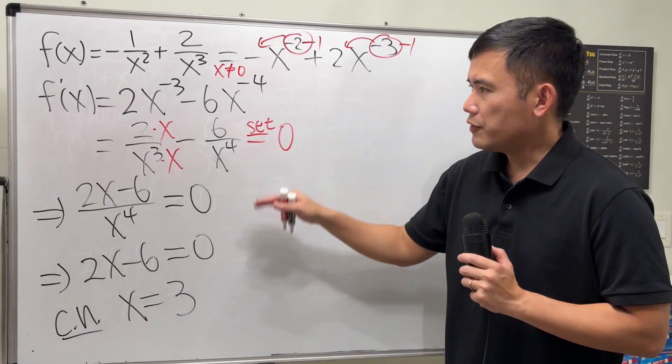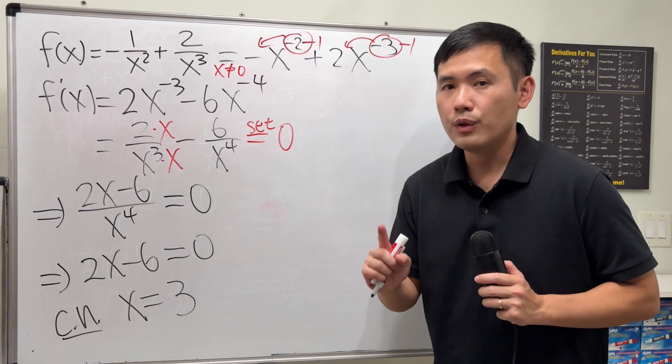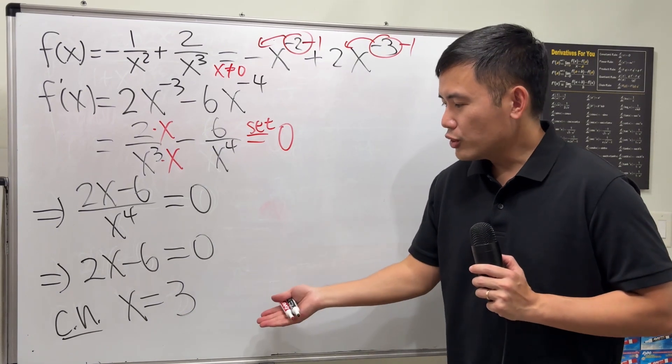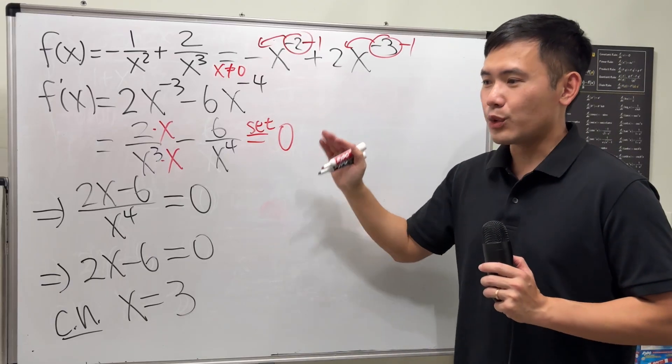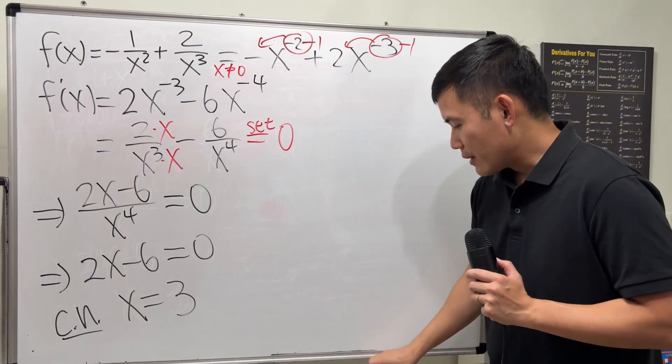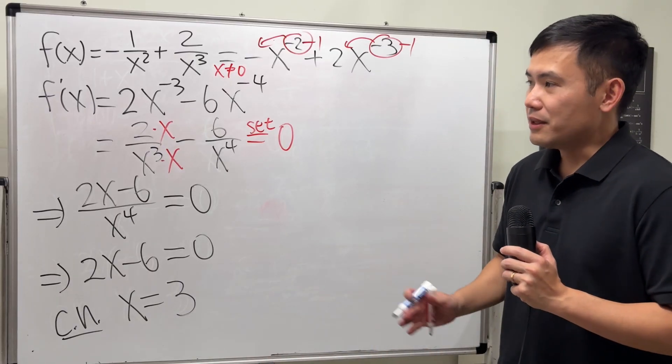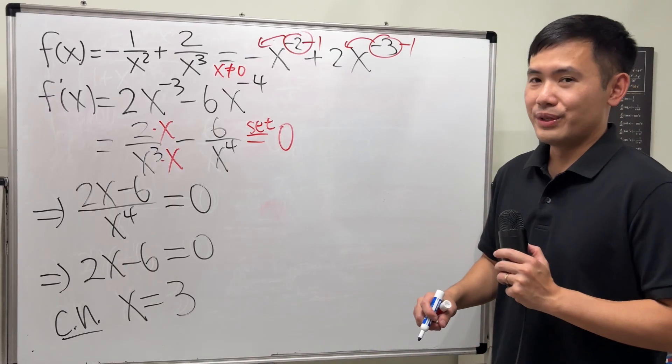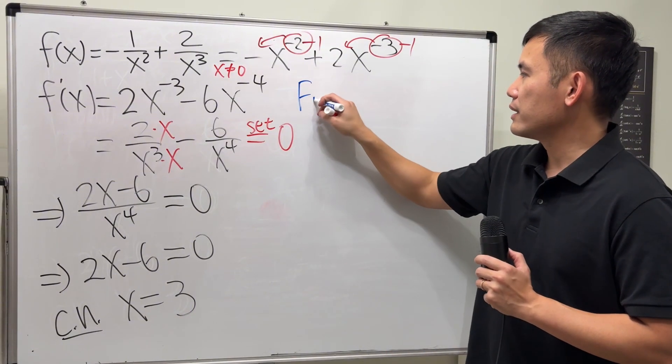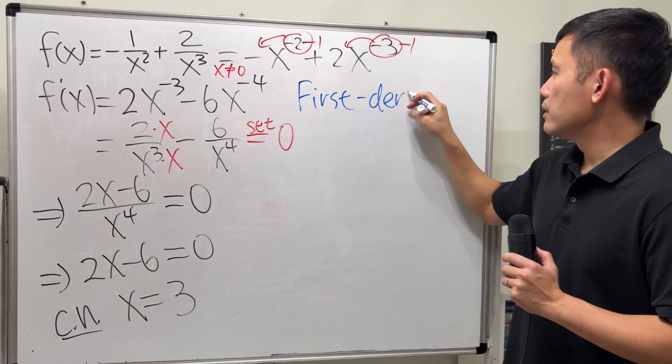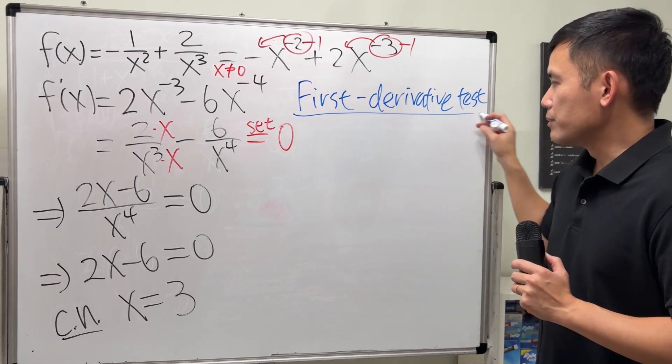Now, we have the first derivative being equal to 0 at x equals 3. So what do we know? It could be a local min or a local max. Is it going to be a point of inflection? Most likely not, because you will have to get the second derivative in order to decide that. So now, how are we going to decide if this is a local min or local max? Or maybe sometimes neither. We have to be careful. This is how we are going to do it. This is called the number line test for the first derivative test.